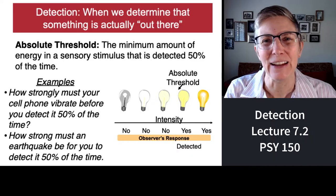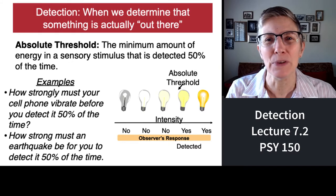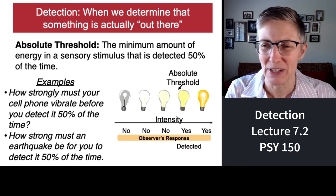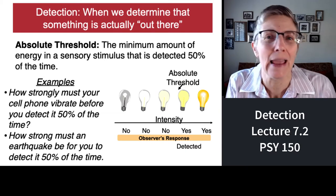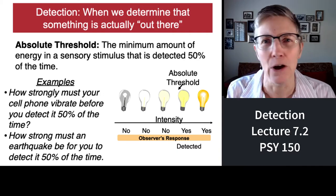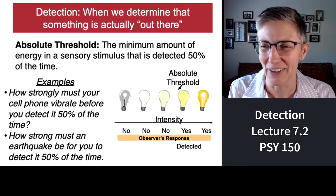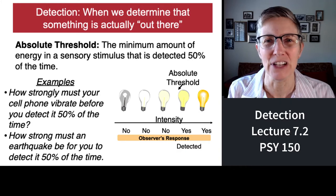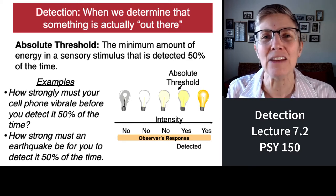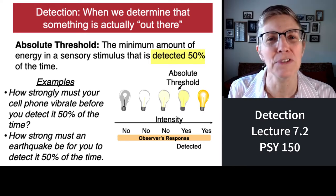It turns out that understanding when and how we're able to detect the presence of something is really complicated. So we have to come up with nuanced terms, and one of them is absolute threshold. You would think absolute threshold meant the threshold at which we could detect something every time — but no, because detection is complicated. An absolute threshold is defined as the minimum amount of energy in some sensory system needed to detect something accurately 50% of the time, half the time.